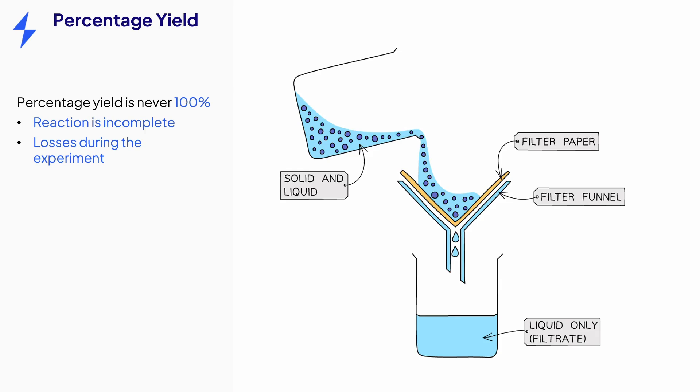Take filtration as an example. As the mixture of the solid and liquid is poured through the filter paper, some of the solid and the liquid are left behind in the beaker. Some of the liquid is also left behind, trapped on the filter paper.